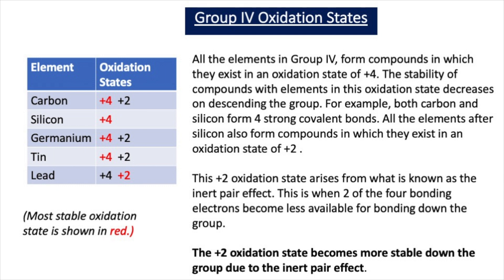Silicon only has an oxidation state of plus 4. Germanium has oxidation states of plus 4 and plus 2, but the plus 4 is the most stable. Tin has oxidation states of plus 4 and plus 2, but the plus 4 state is the most stable. Lead has oxidation states of plus 4 and plus 2, and the plus 2 oxidation state is the most stable.